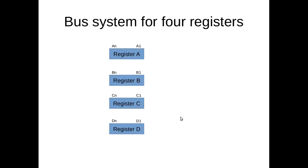We can consider a bus system for four registers: register A, B, C, and D. Assume that all the registers are n-bits wide. We represent these bits as A1, A2 up to An; B1, B2, B3 up to Bn; C1 to Cn; and D1 to Dn. Then how can these registers exchange or transfer their data?